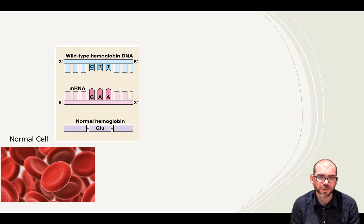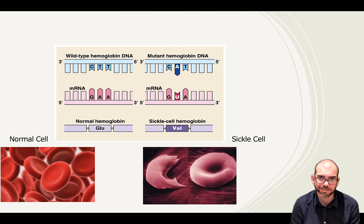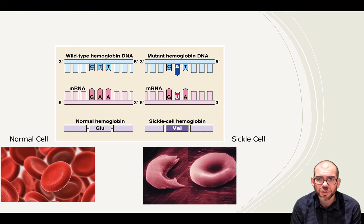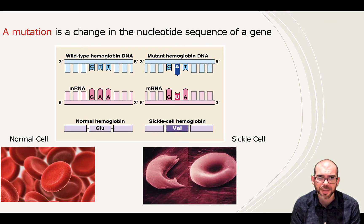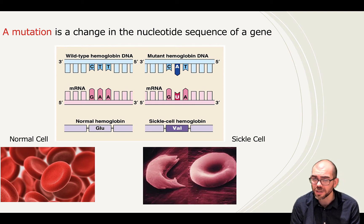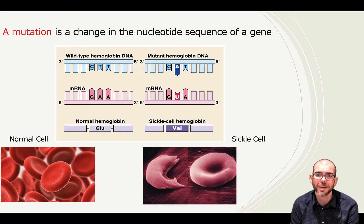Here is the zoomed-in sequence of part of the hemoglobin protein. We call it the wild type because this is how hemoglobin normally occurs in the wild. Here's a mutated version. You can see that changing just one letter caused it to become sickle — the red blood cell has now changed its shape. This is a mutation: a change in the nucleotide sequence of the gene. If we change the DNA code, that's going to change the mRNA code, which has the potential to change what amino acids are produced during translation.